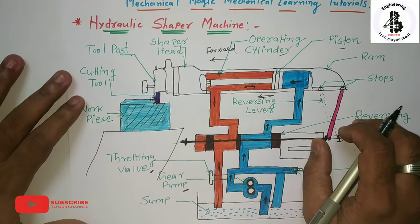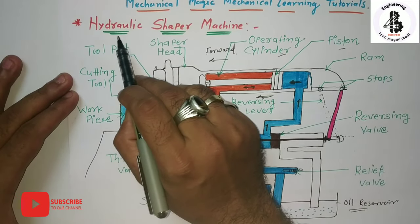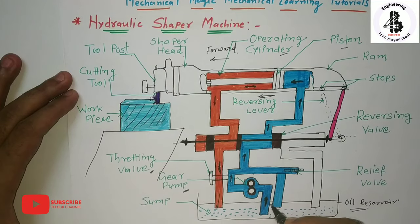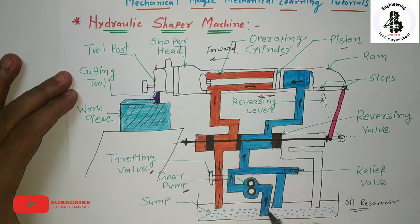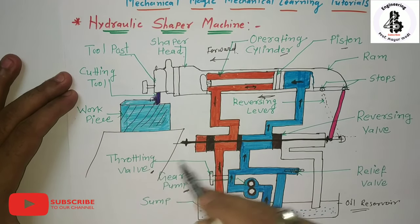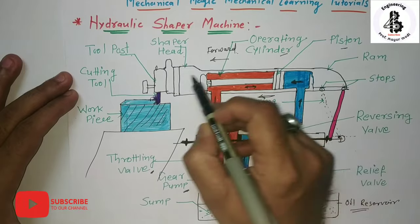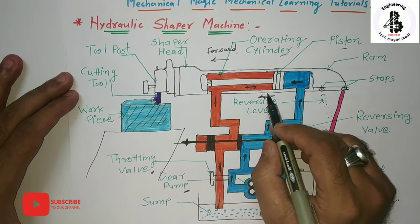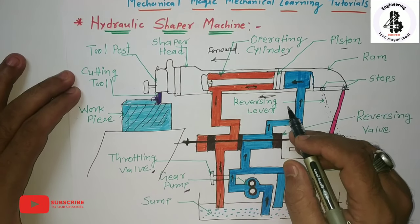Welcome to my YouTube channel Mechanical Magic Mechanical Learning Tutorials. In this video I am explaining the working and construction of hydraulic shaper machines. This machine mainly consists of a constant discharge gear pump, valve chambers, throttling valves, an operating cylinder, a piston, a piston rod, and a ram body. The piston rod with the piston is bolted onto the ram body.